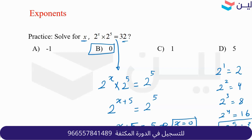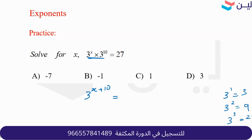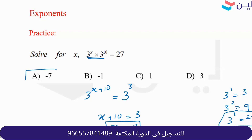Same idea: same bases, work with the powers; same power, work with the bases. For this one, 3 to the x times 3 to the 10 equals 27. Change 27: 3 to the first is 3, 3 squared is 9, 3 to the third is 27. So this becomes 3 to the third. Same bases — work with the powers: x plus 10 equals 3, so x equals negative 7.